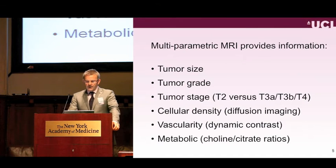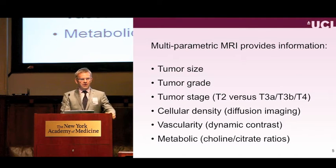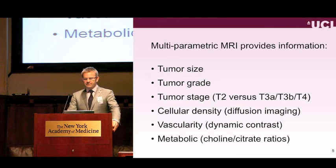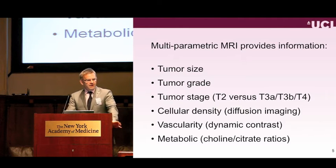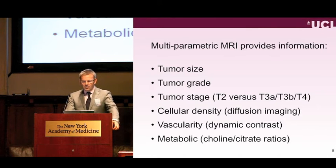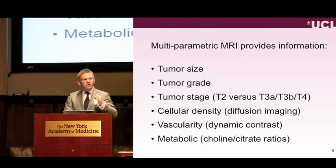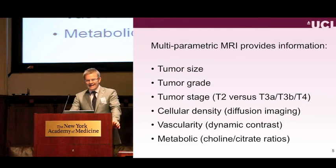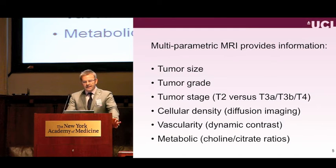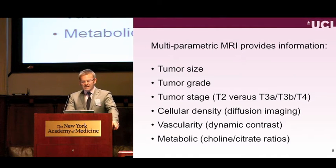Multi-parametric MRI, which has the most literature currently but is not the only imaging available, gives us information on tumor size, some information on tumor grade, information on tumor stage—it's very good at that—as well as cell density, vascularity, and the metabolic changes occurring in the cancer versus background tissue. I'll leave the details of the MRI components to the expert radiologists in the room.